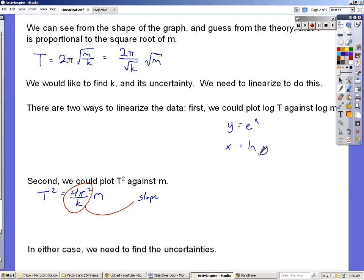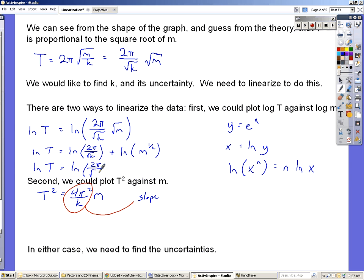Anyway, ln T versus ln m. So we get ln T equals the natural log of (2π/√k) times √m. ln T then equals the log of the product, which is equal to the sum of the logs. So natural log of (2π/√k) plus the natural log of √m. And I'm going to write that instead of square root of m, m to the one-half power. And you might also recognize that when you take the log of something raised to a power, so natural log of x^n is just equal to n times the natural log of x.